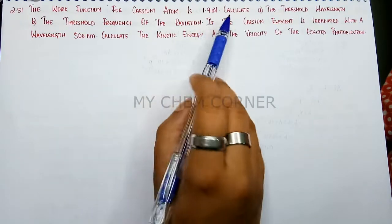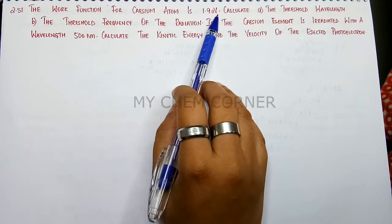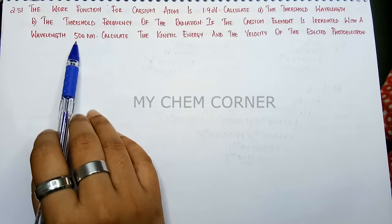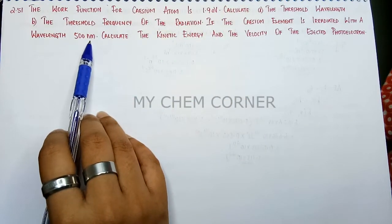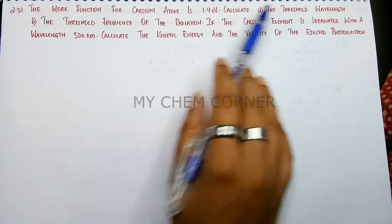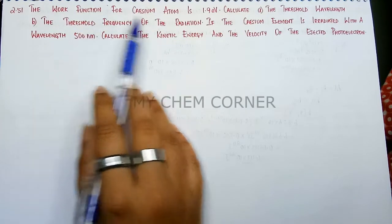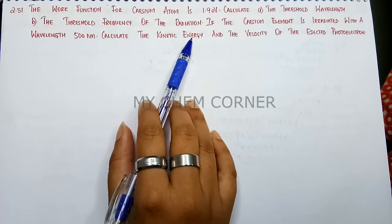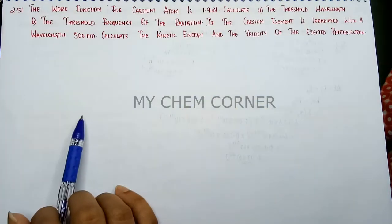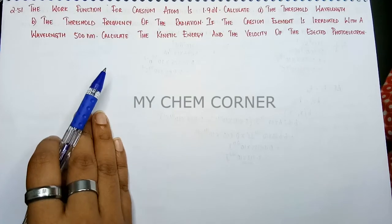In this question we are given the work function in terms of electron volt and a wavelength of 500 nanometers. We have four things to calculate: threshold wavelength, threshold frequency, kinetic energy of the electron, and velocity of the electron. Let's see step by step how to do it.